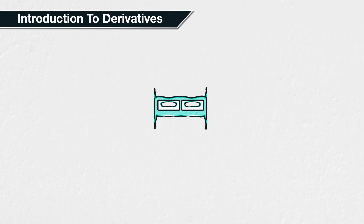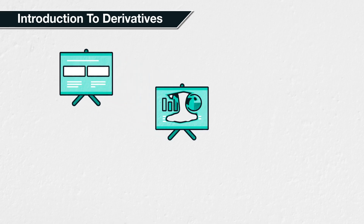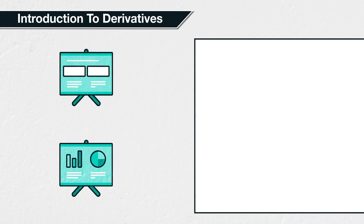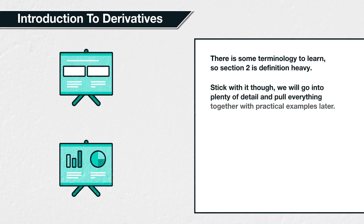Firstly, it's important to lay down a base level of knowledge. This is to make sure you understand what is being talked about later in the course when we start moving into the more intermediate and advanced topics. There is a fair amount of terminology to learn with options, so this section will be a little definition heavy. Stick with it though, and don't worry if you can't quite visualize how everything connects together yet, because we will be going into much more detail and coming back to these definitions in later sections.